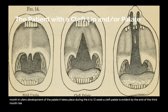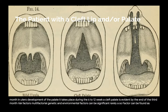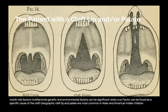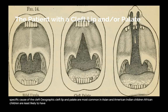Risk factors: multifactorial genetic and environmental factors can be significant. Rarely a single factor can be found as a specific cause of the cleft. Geographically, cleft lip and palate are most common in Asian and American Indian children. African children are least likely to have clefts, at approximately 1 in 2500.